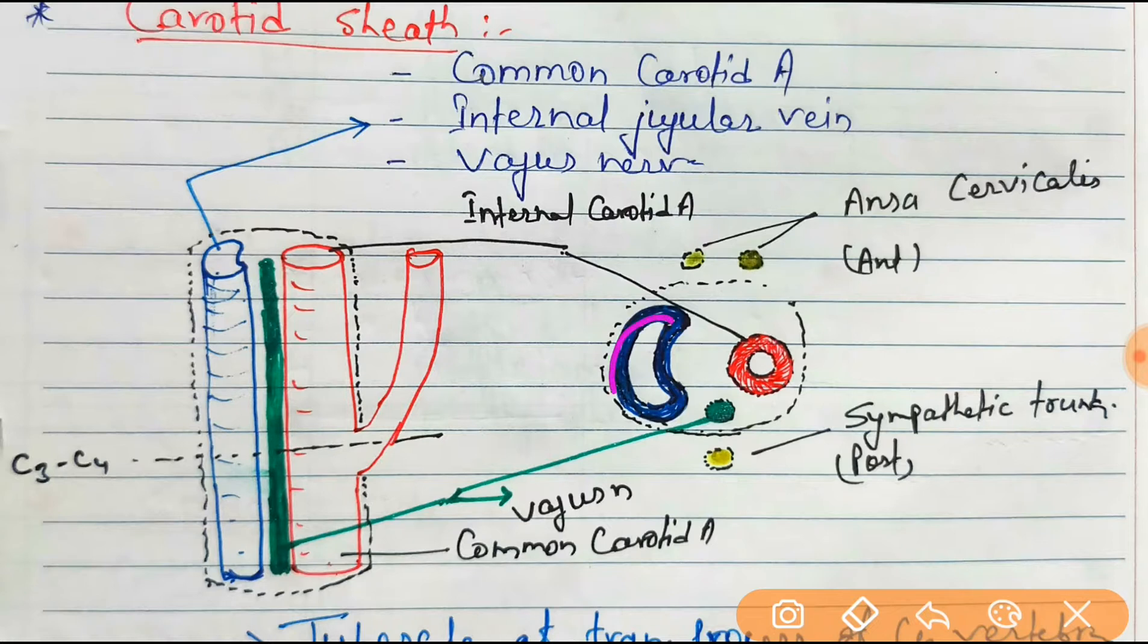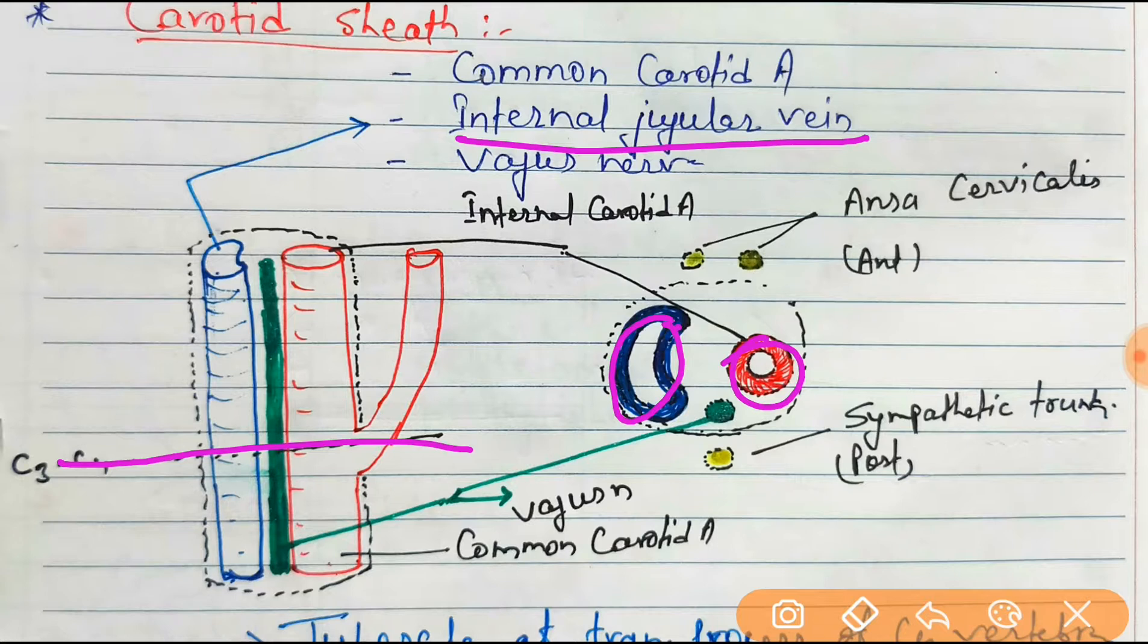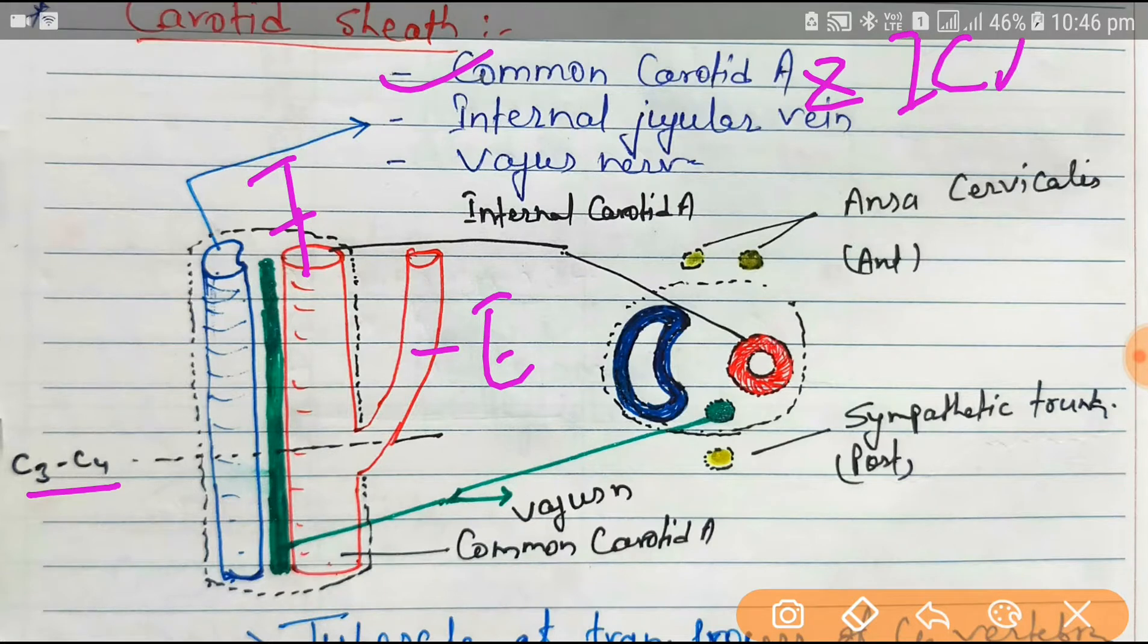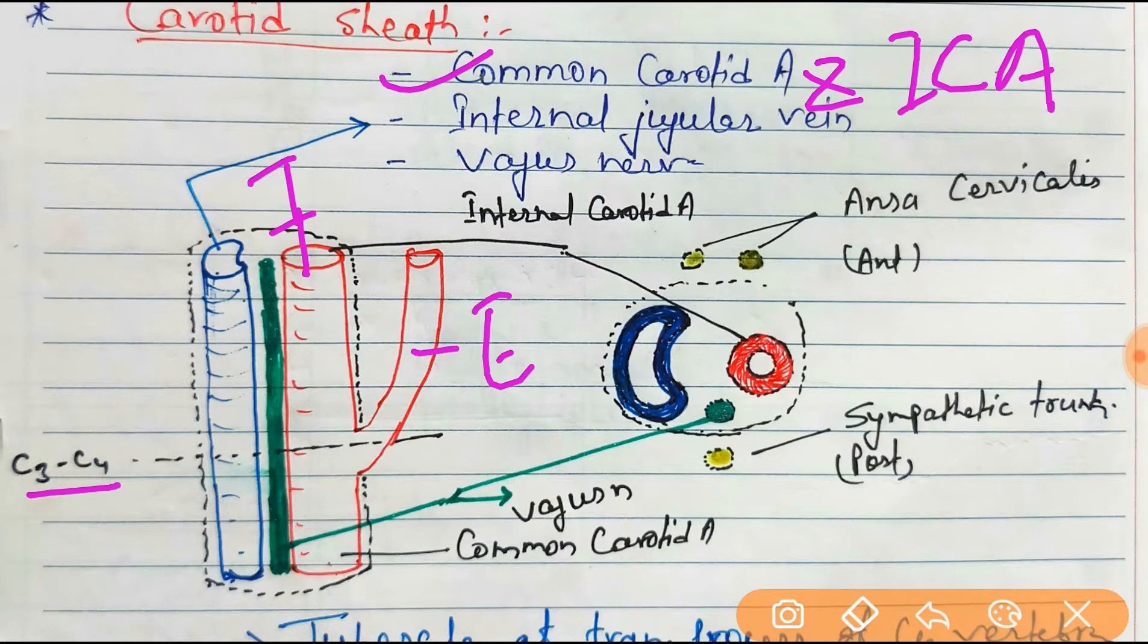So what is this? It is the internal jugular vein. And it is common carotid artery if it is below the level of bifurcation, that means bifurcation of the common carotid artery at the level of C3 and C4 vertebra, where it bifurcates to become internal carotid artery and external carotid artery.